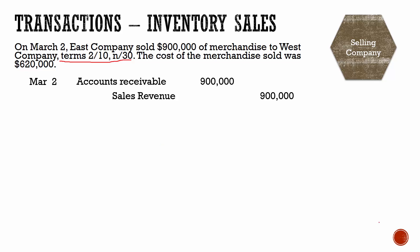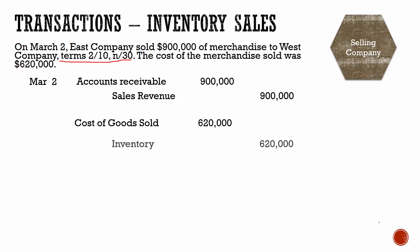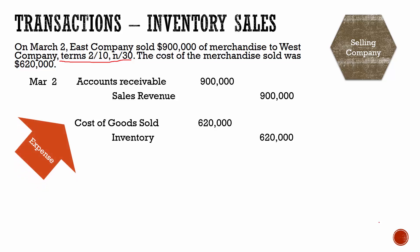Under the perpetual method, every time we make a sale, we also have to record cost of goods sold. So there's going to be a second journal entry on this date to debit cost of goods sold and credit inventory for the original cost of that inventory. The $620,000 is what it cost East Company to obtain that inventory when they bought it. We now have an expense to show that we've used up that inventory by selling it, and that expense is called cost of goods sold.